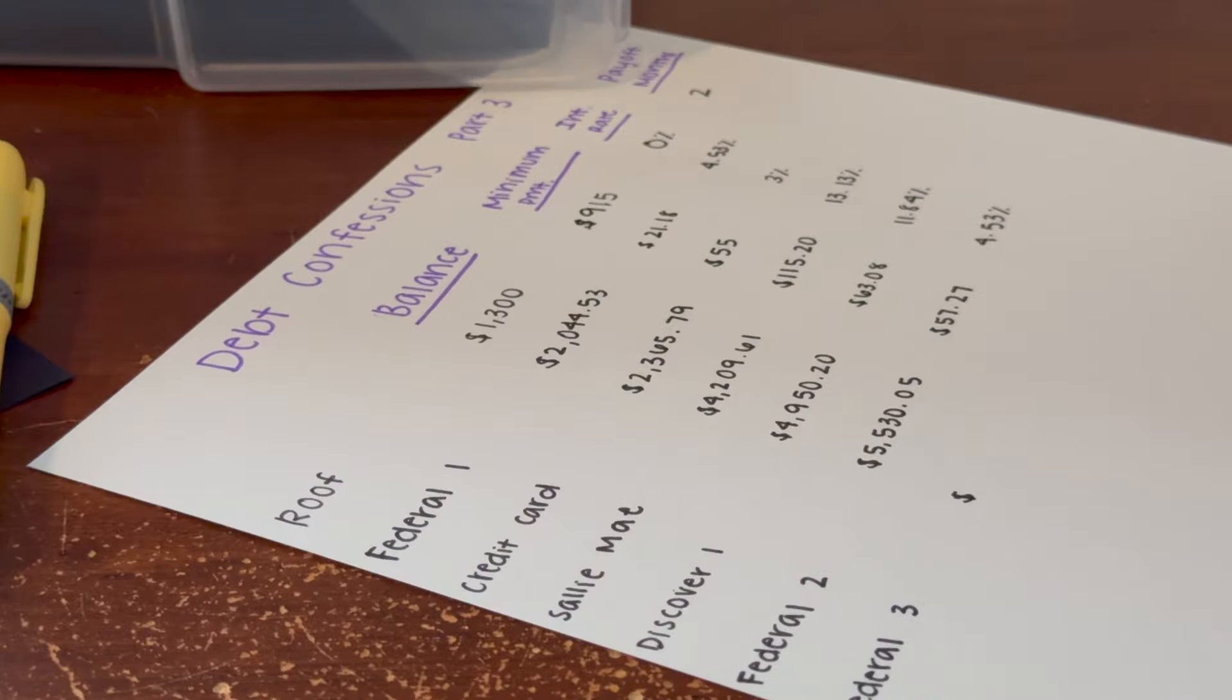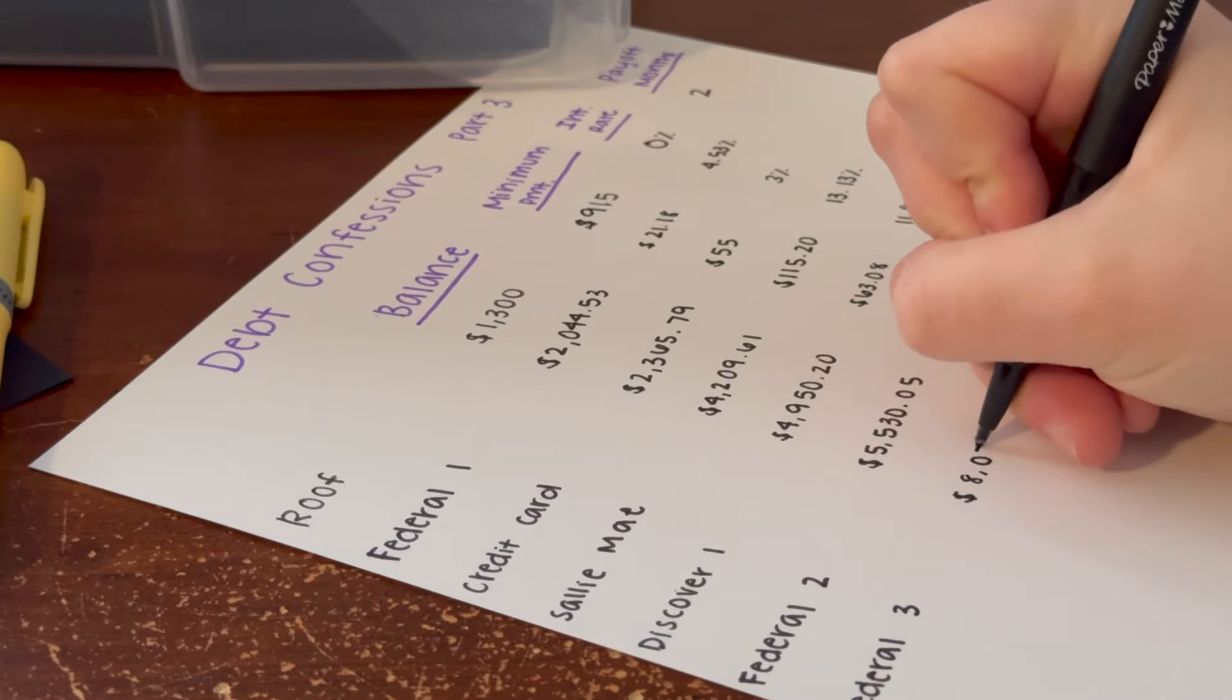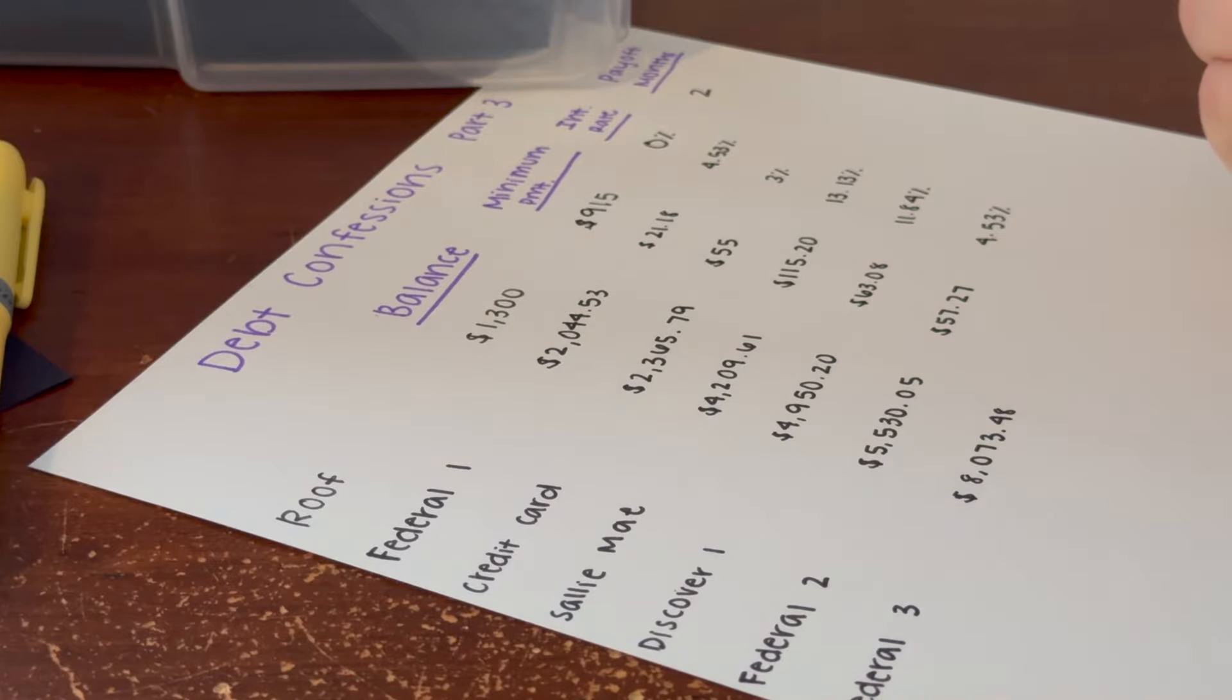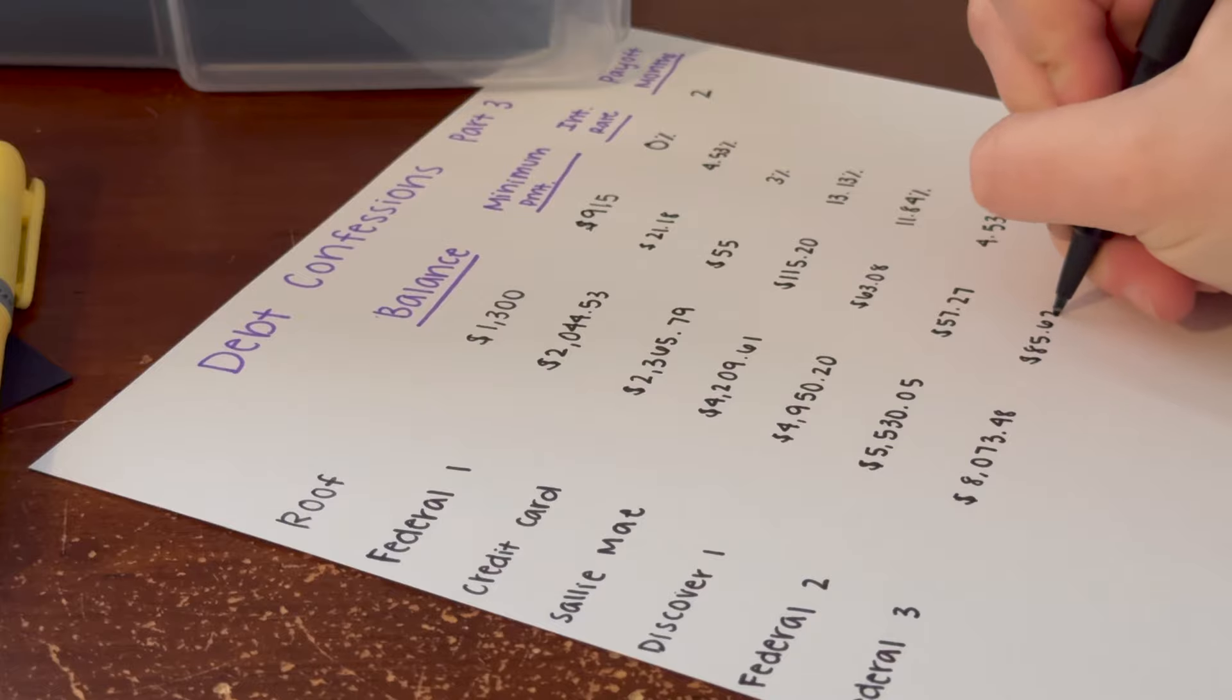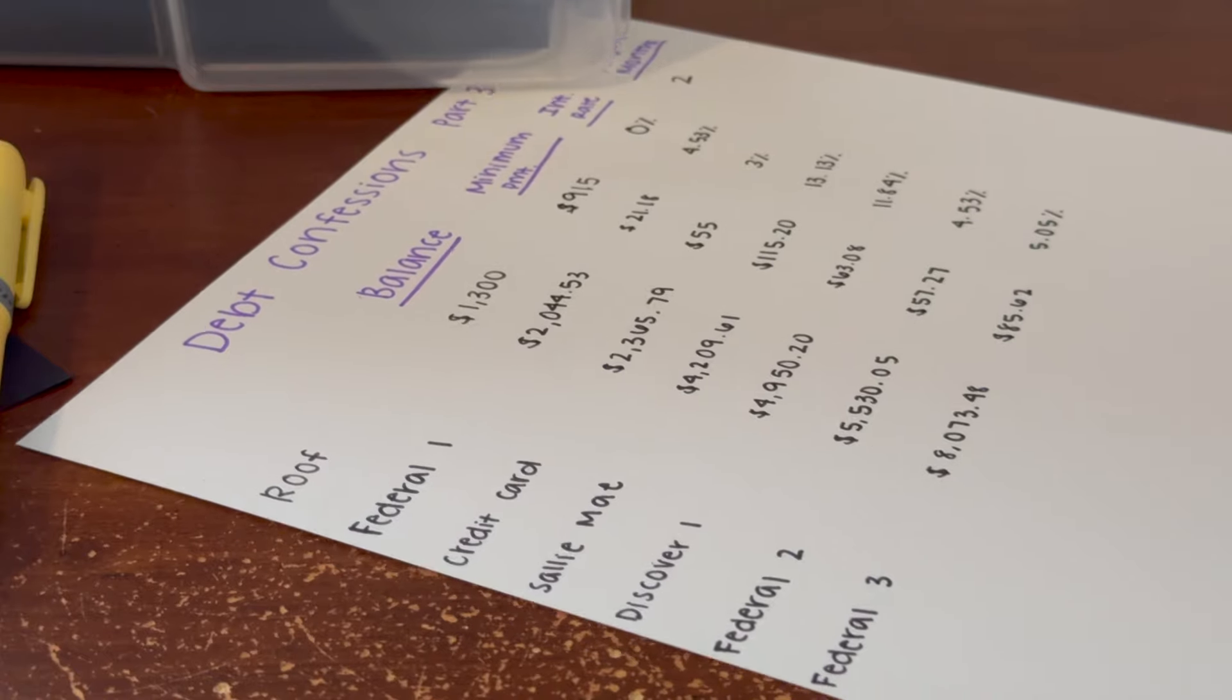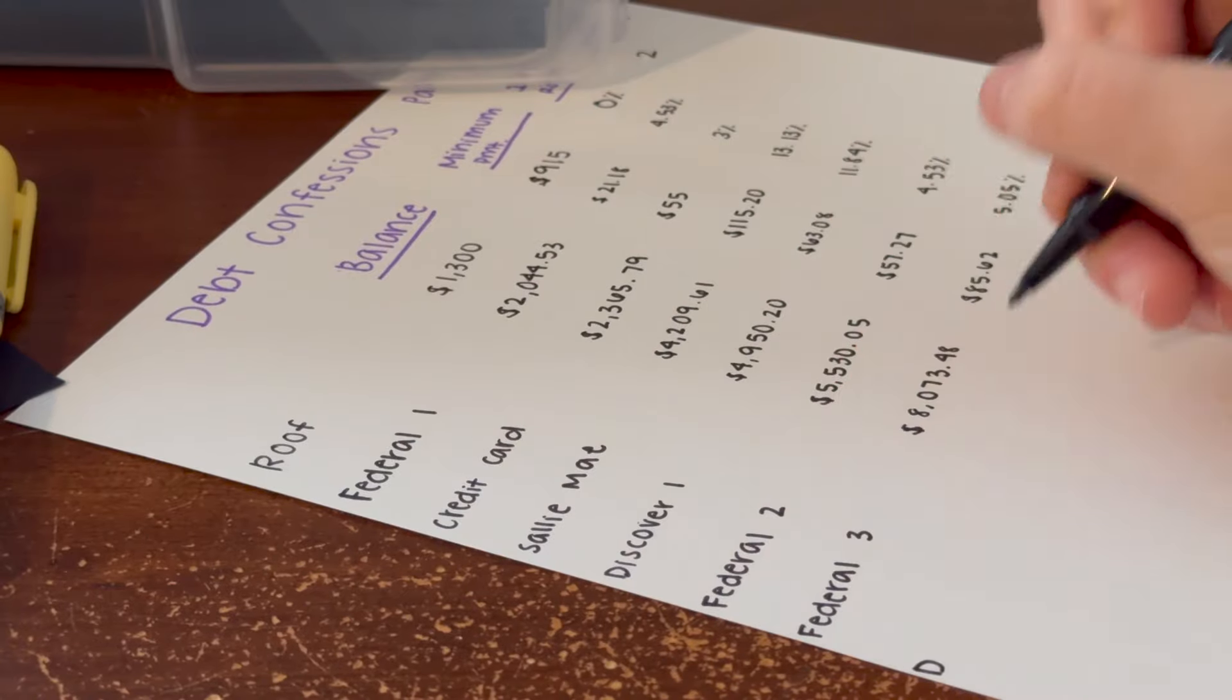We have my last piece of my federal loan and this one has a balance of $8,073.48. The payment on this is $85.62 with a 5.05% interest rate.